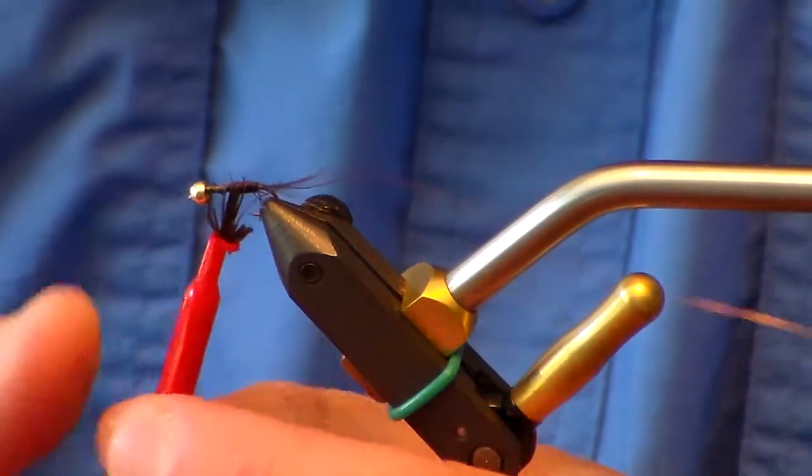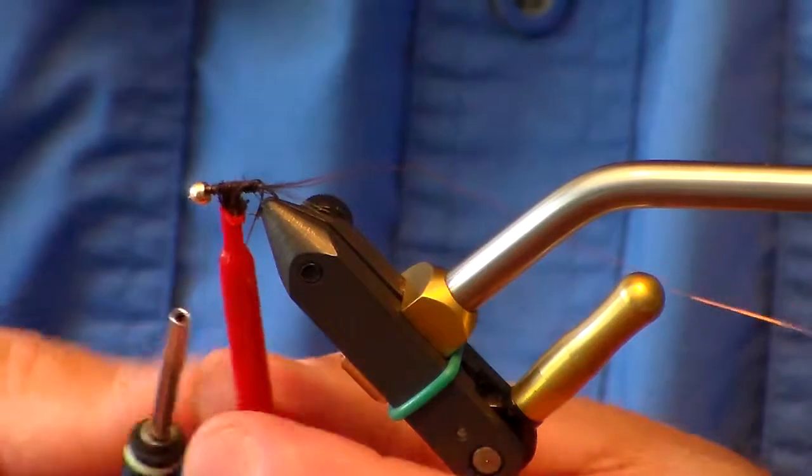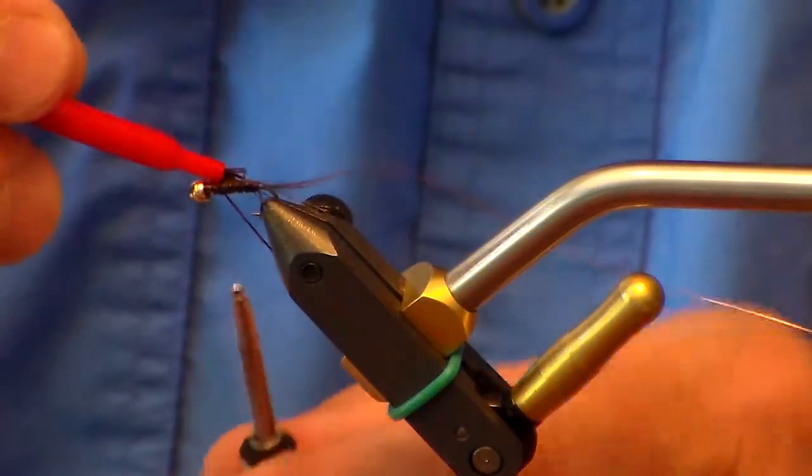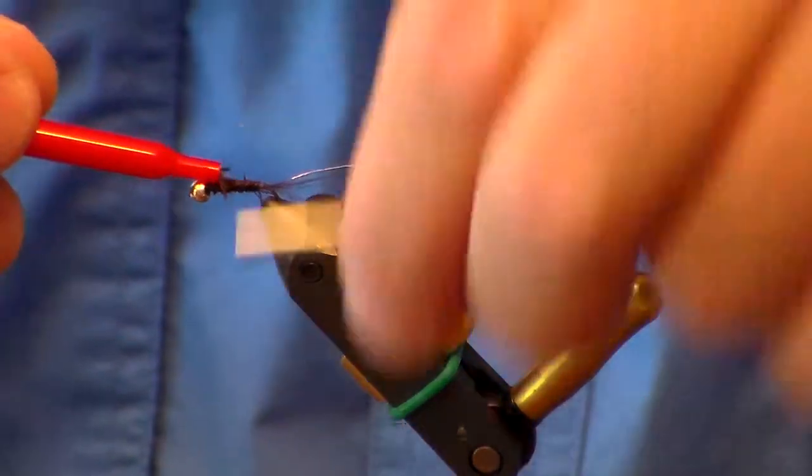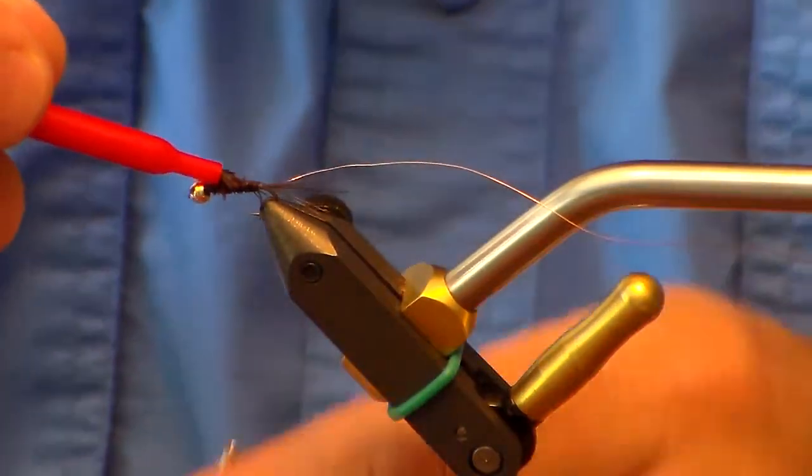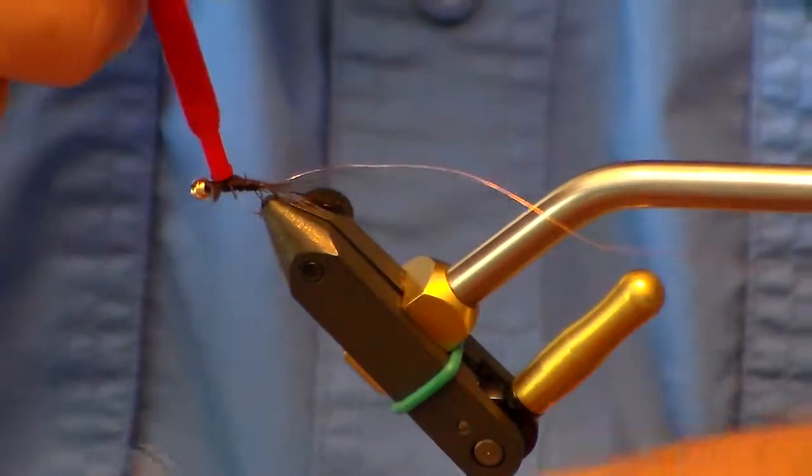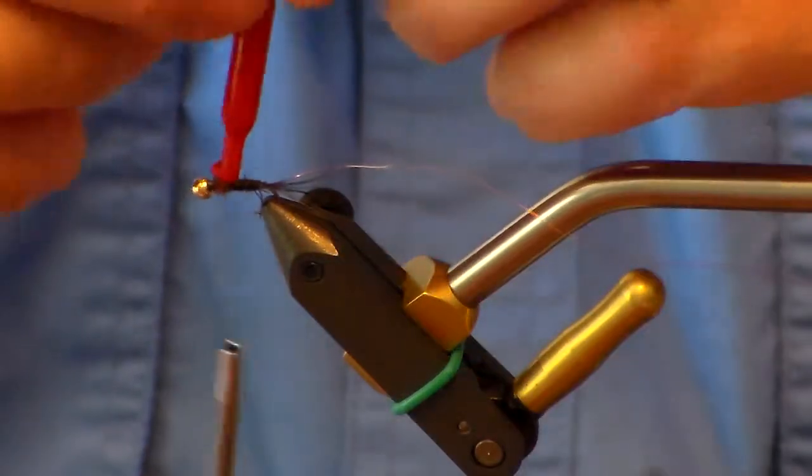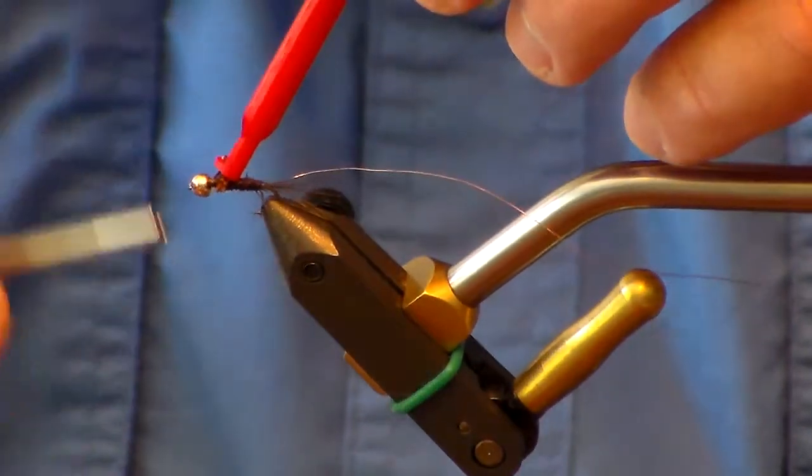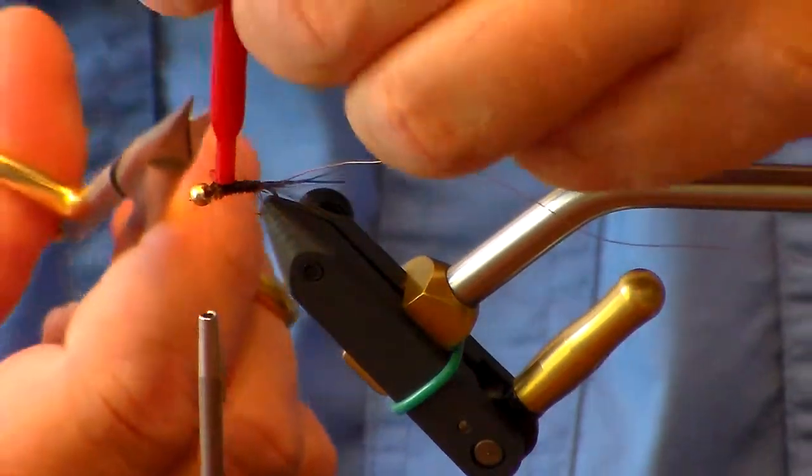We'll have to see if I can finish this. I like to wrap that about three times. And then I also like to wrap it towards the front. That way I've tied that material in really well. And then I'm going to clip this off.